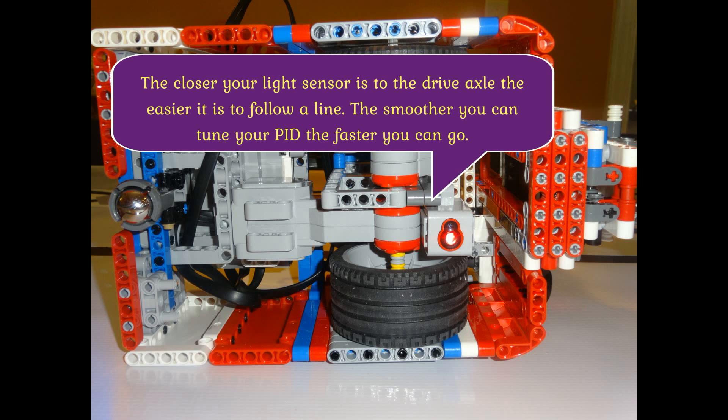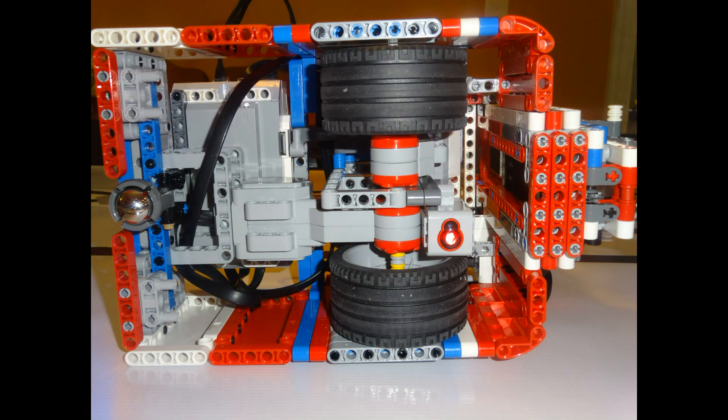It's easier to follow a line when the light sensor is closer to the drive axle. The easier it is to follow a line, the faster you can go. We won't be using KI in this video because you don't need KI when you have a reference point like a black line.